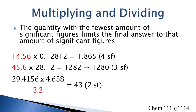And finally, in the last example, the number with the lowest amount of significant figures is two — the 3.2 in the denominator — so the final answer is limited to two significant figures.